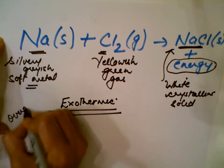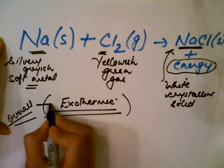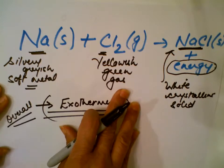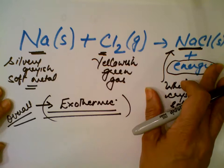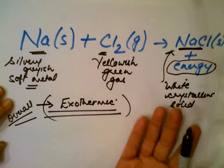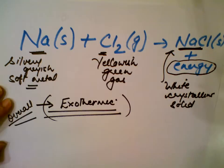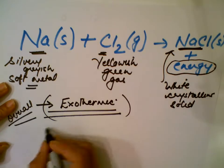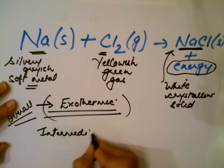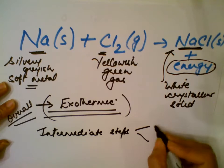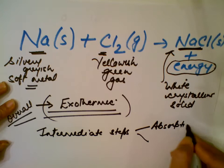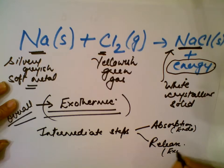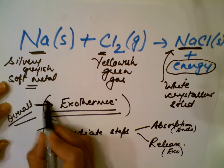This does not happen in one step — for making sodium chloride it's a five-step process. Those steps may not be in a particular sequence, but there are intermediate steps. During those intermediate steps, there is both absorption and release of energy. Absorption is endothermic and release is exothermic; however, the overall reaction is exothermic.